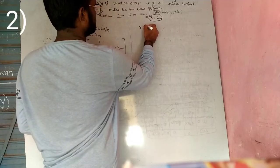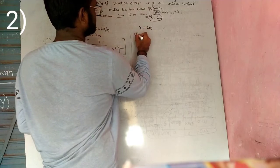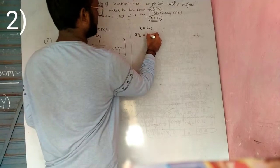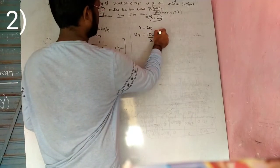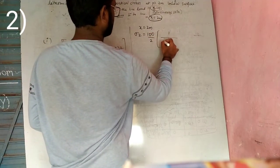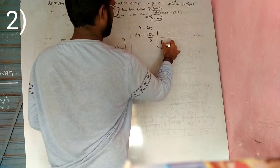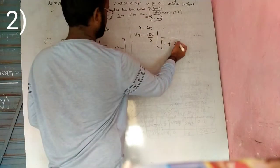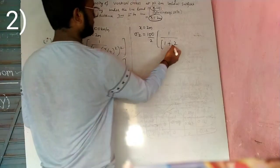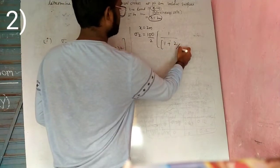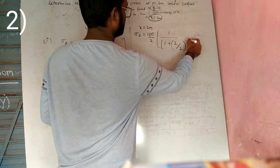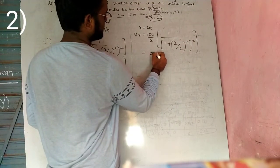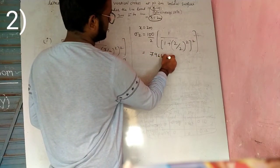For x equal to 2 meter and z equal to 2 meter, σz equals 100/2 multiplied by 1 divided by (1 plus (2/2)²)², giving σz equal to 7.96 kN/m².